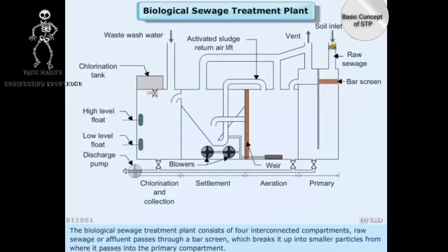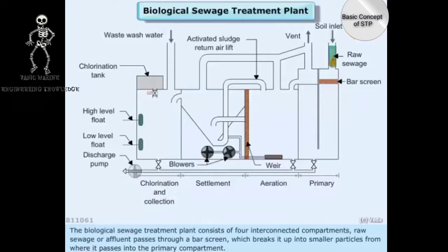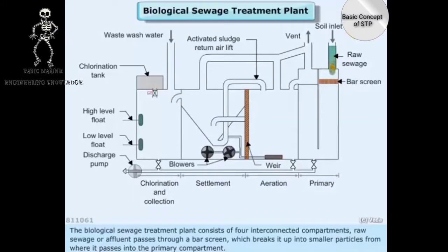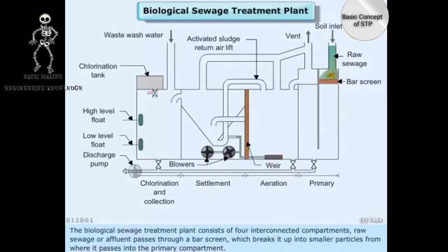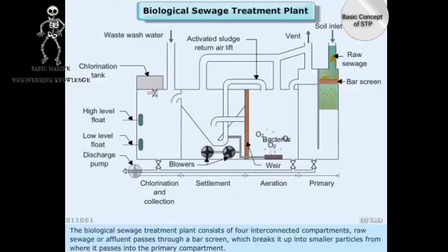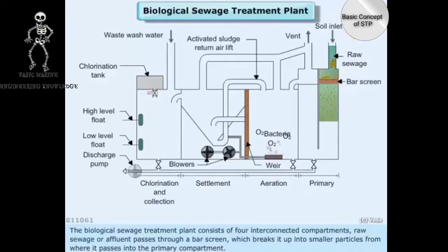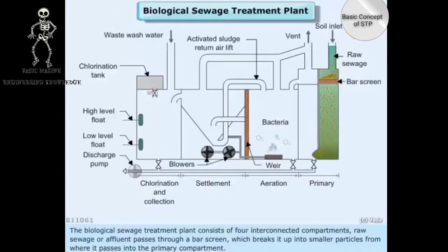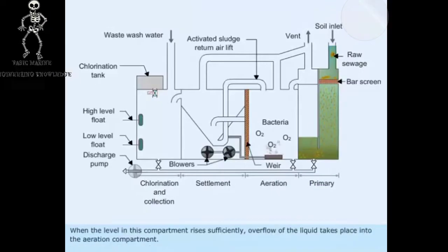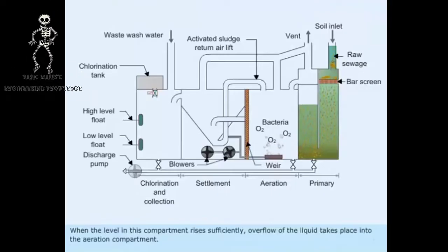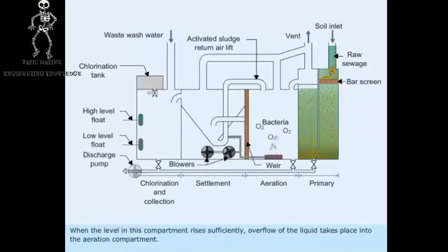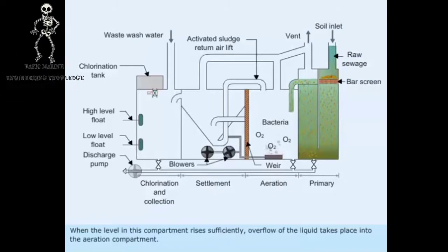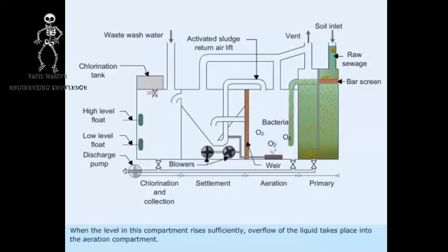The Biological Sewage Treatment Plant consists of four interconnected compartments. Raw sewage or effluent passes through a bar screen, which breaks it up into smaller particles, from where it passes into the primary compartment. When the level in this compartment rises sufficiently, overflow of the liquid takes place into the aeration compartment.